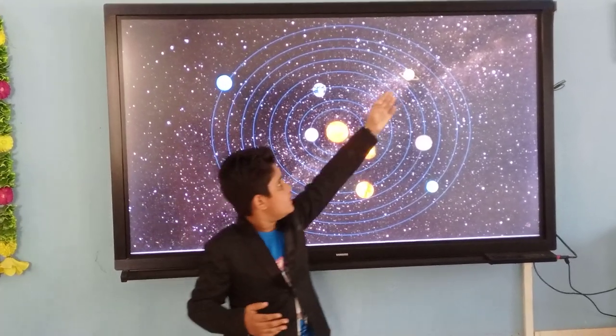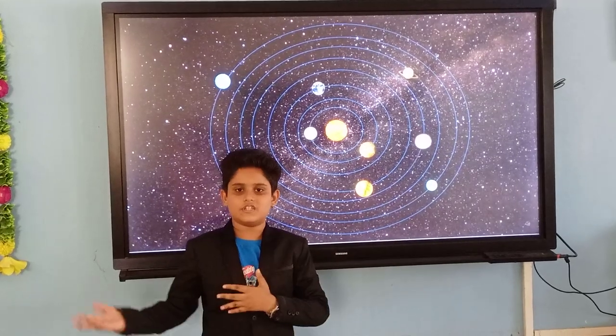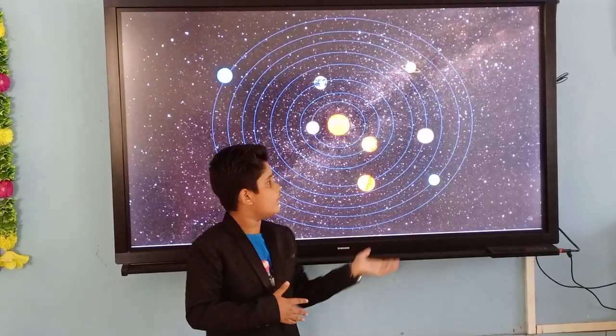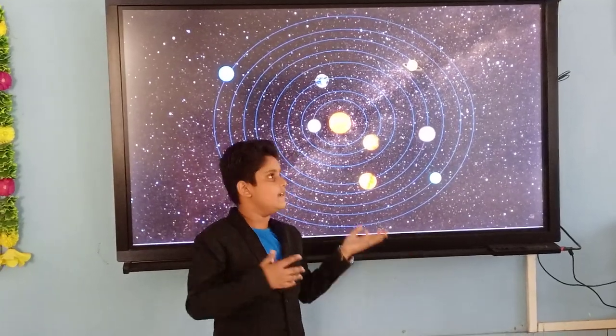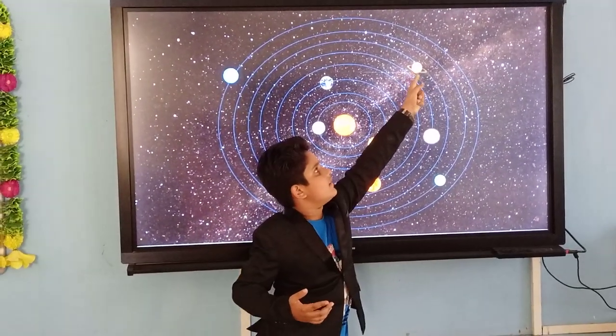Next is Saturn. Saturn is the second biggest planet in the solar system, and it is the sixth planet. It has big rings around it. It is serene.